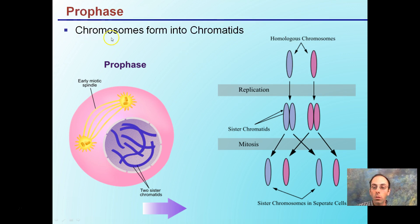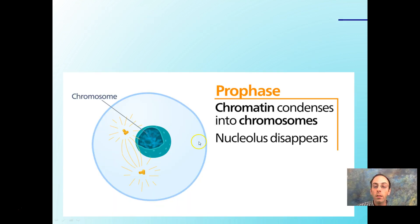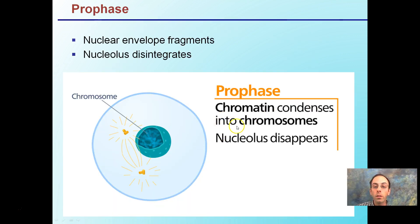Starting with prophase, chromosomes form into chromatids — specifically sister chromatids. After the replication phase, we're going into mitosis, where we're separating those out to form two identical cells. In prophase, chromatids condense into chromosomes, the nucleolus disappears, and the nuclear envelope fragments. The nucleolus is where rRNA is made.